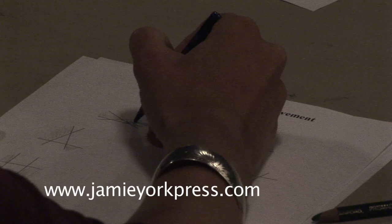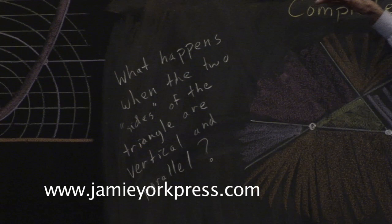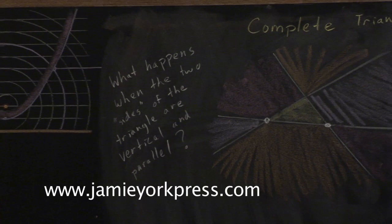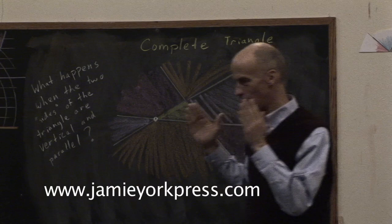I'd simply like to leave you with a question. Remember how I said I'd like to leave my students with a question? So I'd like to leave you with a question. And the question I'm leaving you with is, what happens here at 9 o'clock when the two sides of the triangle are vertical and parallel to each other? There's something very strange going on there. And so I'm leaving you with that as food for thought. Thank you.